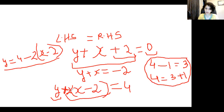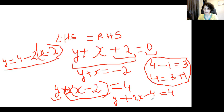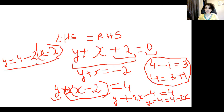Instead, I should open the bracket first. This becomes y plus two x, and two into minus two is minus four, so y plus two x minus four equals four. Now there are three terms clearly separated. If I move 2x to the other side, y minus four equals four minus 2x. Understanding this is important in solving algebraic equations.